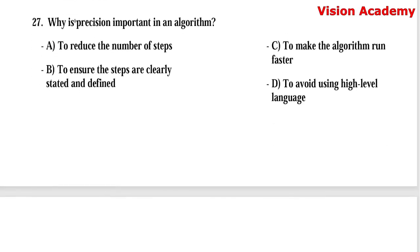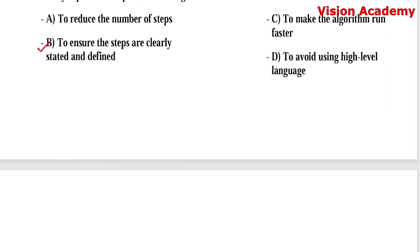Question number 27: Why is precision important in an algorithm? Option A, to reduce the number of steps. Option B, to ensure the steps are clearly stated and defined. Option C, to make the algorithm run faster. Option D, to avoid using high-level language. Here, option B, to ensure the steps are clearly stated and defined, is the right answer.